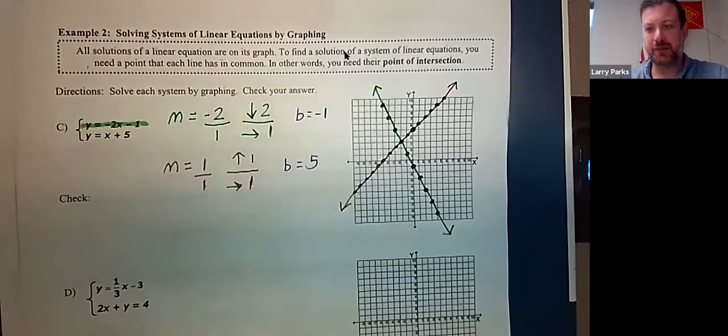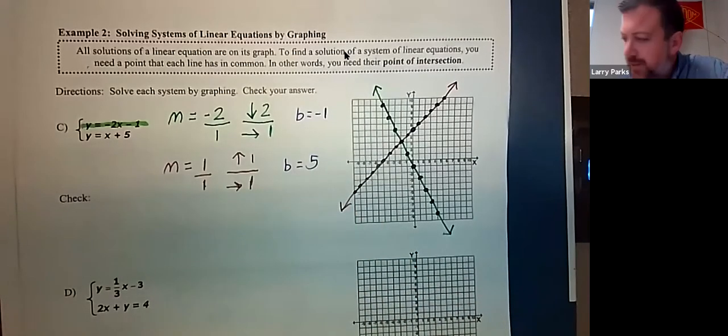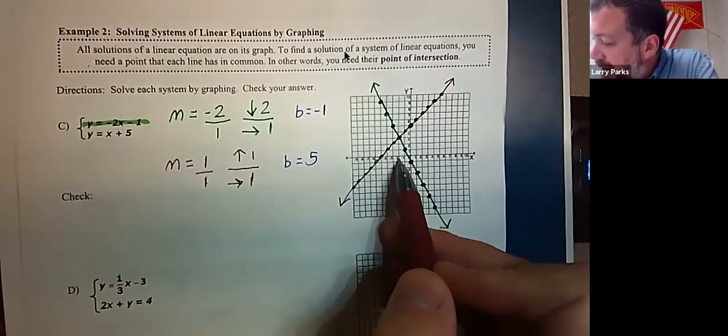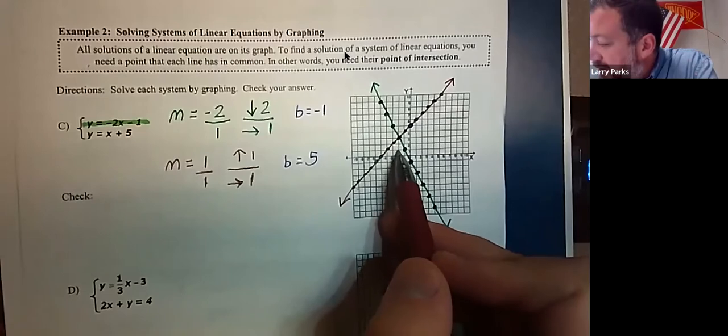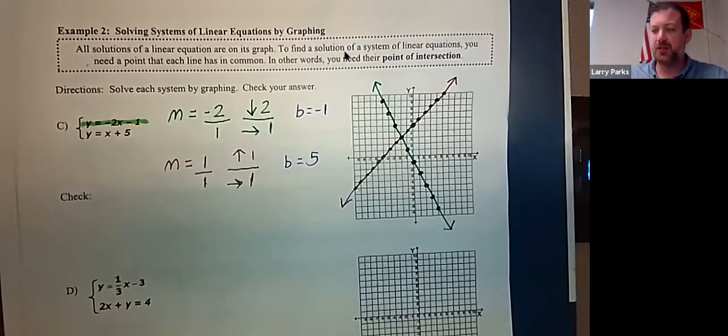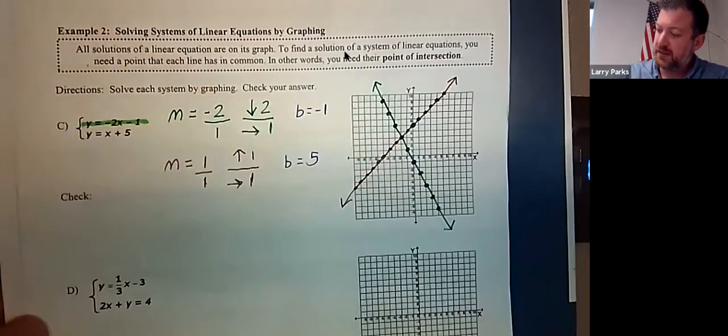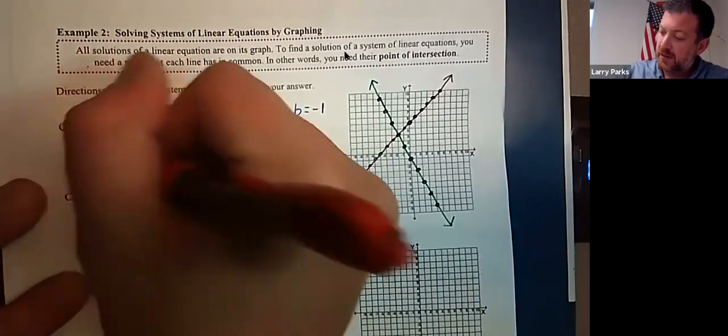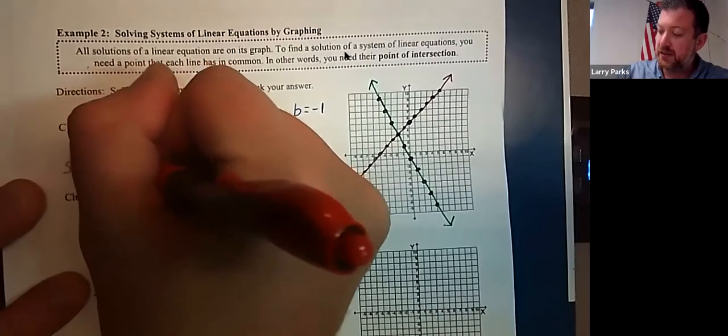So you need a point that each line has in common. In other words, you need to find where those two lines intersect. So looking at the graph, I think based off X and then Y, that would be negative two, one, two, three. So I think the solution is negative two, three.